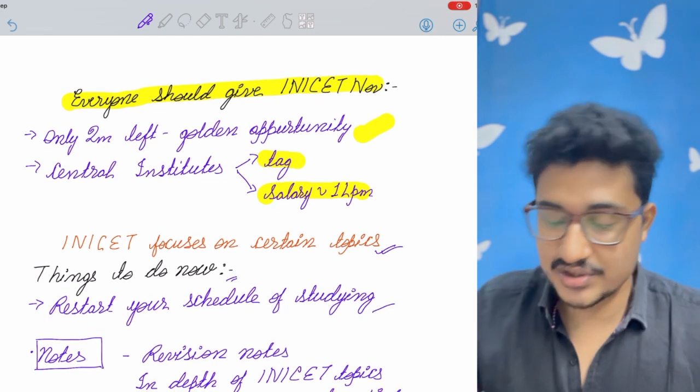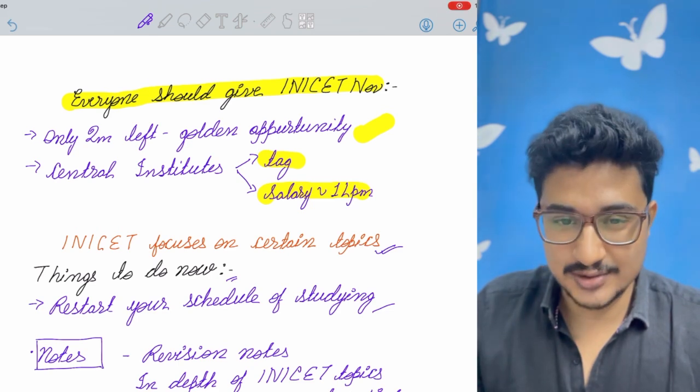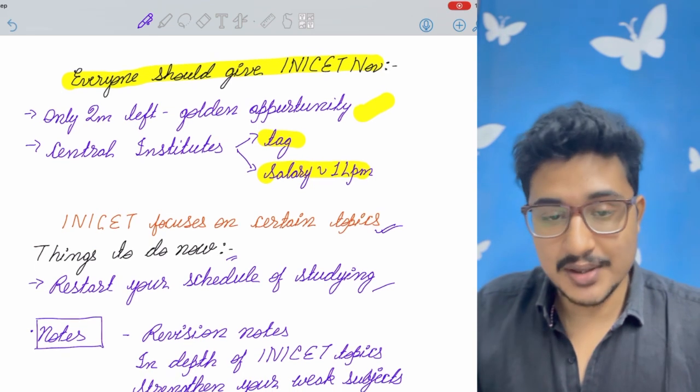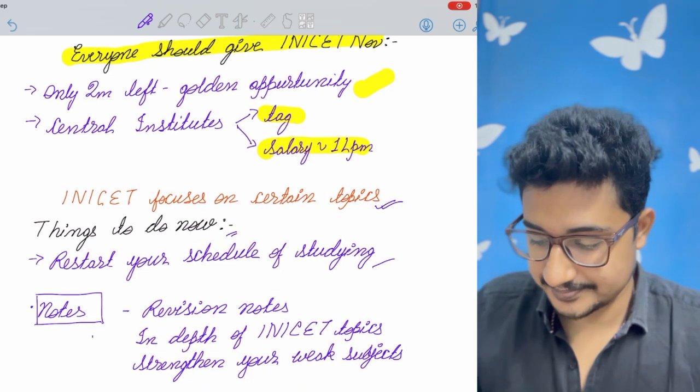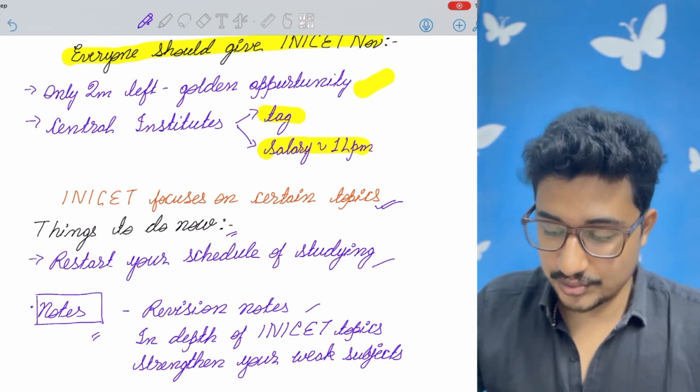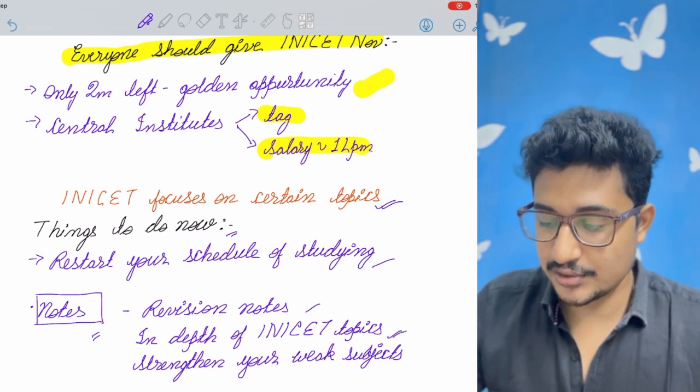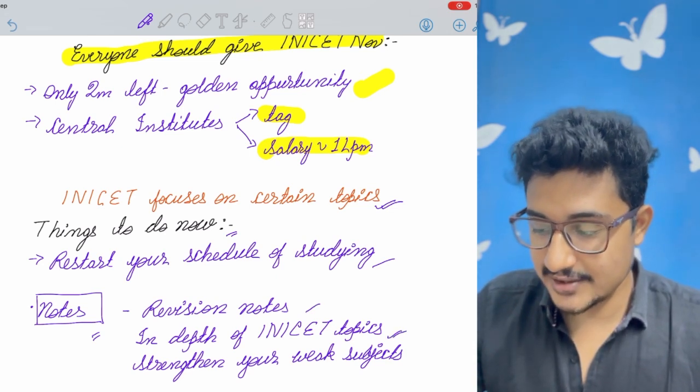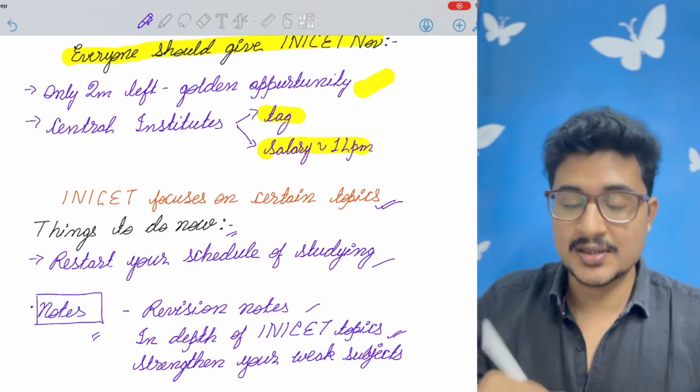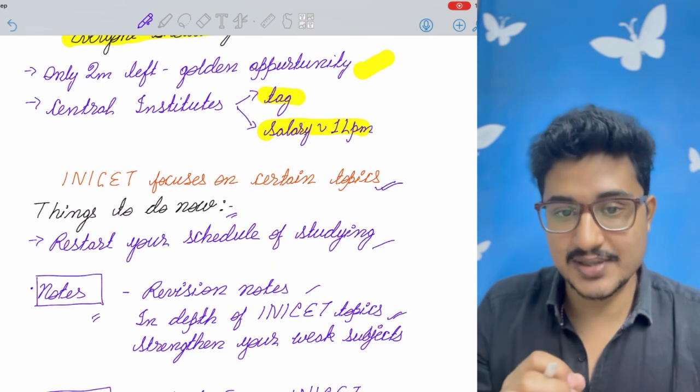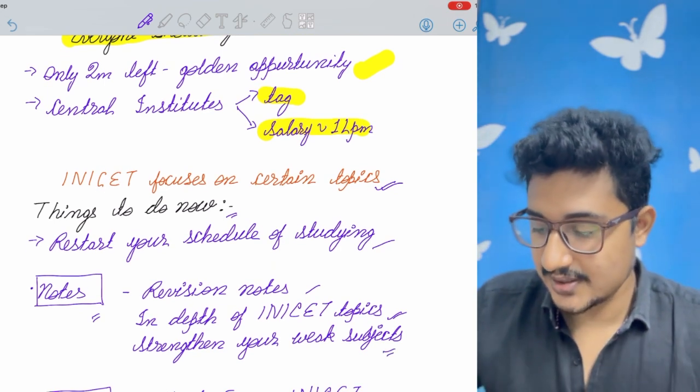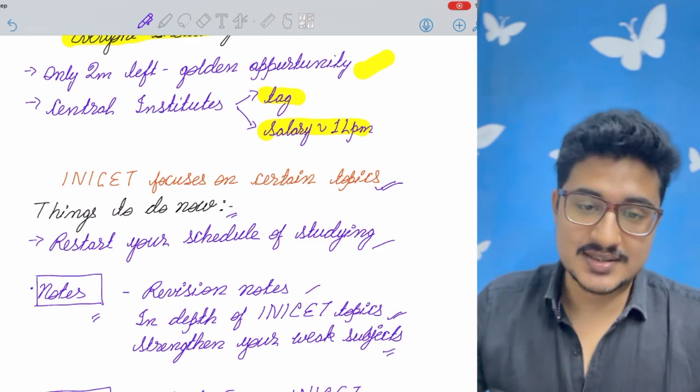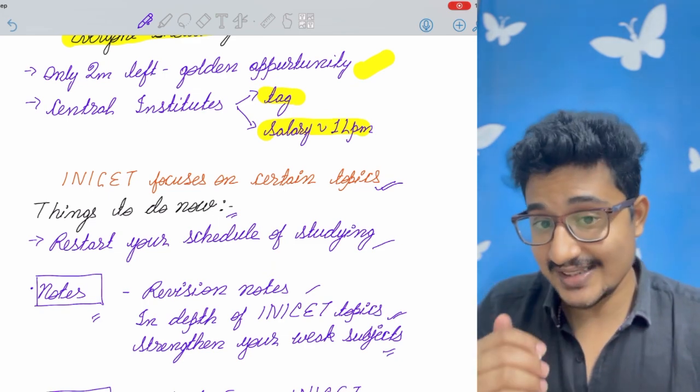So things that you should do now, you should restart your studying schedule. Try one more time for a few months, because now the counseling has not started. So first thing is notes, you should read the revision notes, but the INICET topics you should read in depth. If you are able to read the standard textbook topics, strengthen your weak subject. In this time, you should try to strengthen your weak subject.